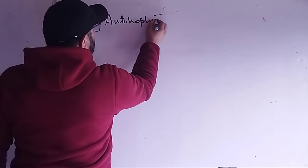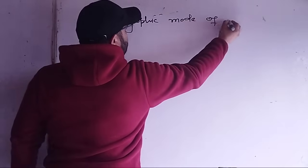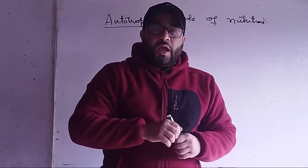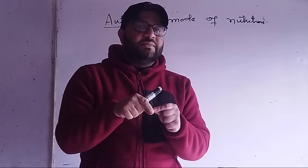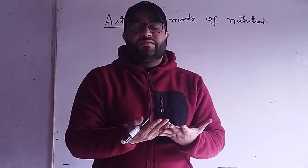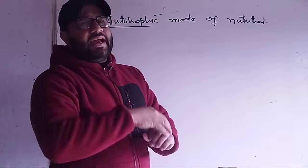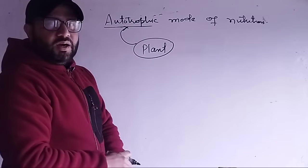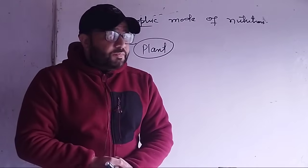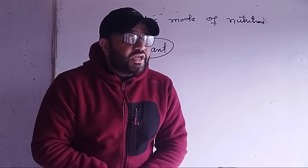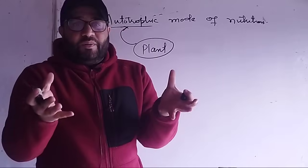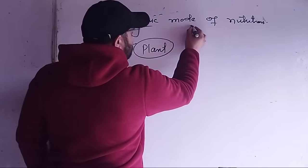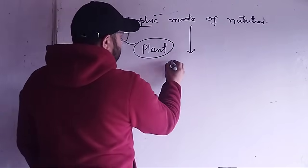Autotrophs, or the autotrophic mode of nutrition. What is autotrophic mode? This is the mode of nutrition in which an organism prepares its own food. Plants show autotrophic mode of nutrition. Autotrophic mode of nutrition is that mode in which an organism prepares its own food with the help of inorganic materials. The autotrophic mode of nutrition uses a process we call photosynthesis.